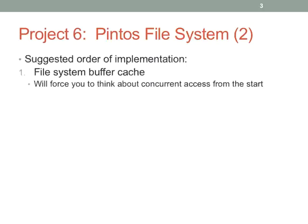This is the suggested order of implementation from the assignment write-up: buffer cache first — and I think that's a great idea, because it will basically force you to think about concurrency from the very beginning. The concurrency in this lab is probably the hardest concurrency you have to do for the entire term. It has all the fun of the virtual memory system plus all the fun of the threading lab, and kernel threads can pause for millions of clocks waiting for the disk controller.